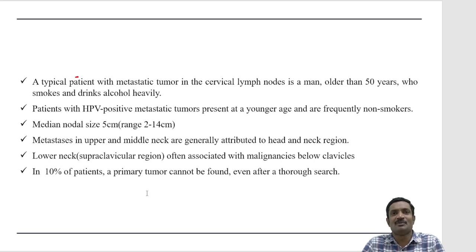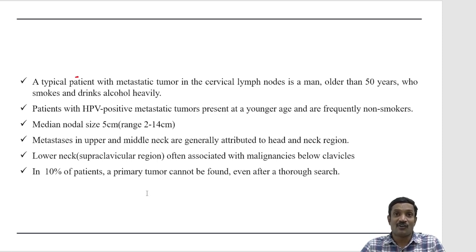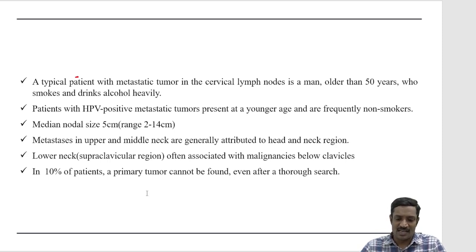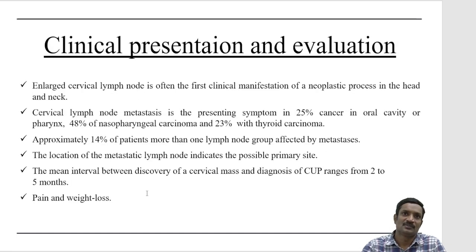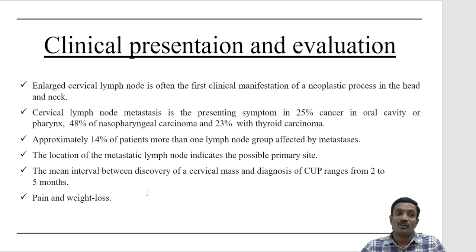For upper and middle neck nodes, search for a primary in the head and neck. For level 4 or level 5B nodes, search for an infraclavicular primary. After all these searches, approximately 10 to 20% of patients will never have a primary found, and they are treated according to the carcinoma of unknown primary protocol. Most of these patients have head and neck cancer, nasopharyngeal carcinoma, or thyroid carcinoma. About 14% present with multi-level involvement.